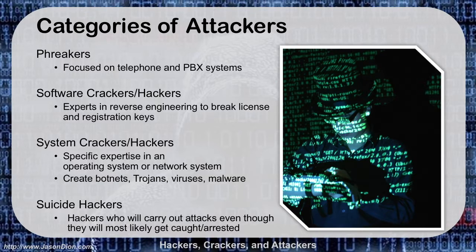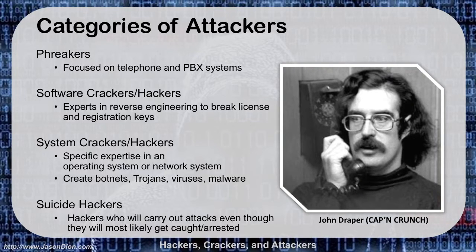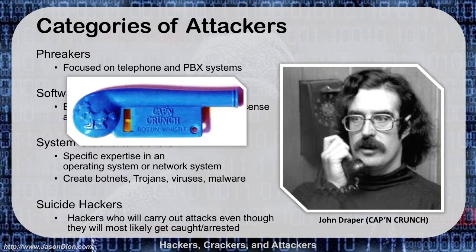Let's talk about the categories of attackers — there's lots of them. Phreakers is a term for people who like to focus on telephone and PBX systems. If you're going after phones, voice, fax machines, or any kind of voice system, that's phreakers. A great example is in the old days we had a guy named Captain Crunch — actually John Draper. He figured out in the 70s that Captain Crunch cereal had whistles, and that whistle happened to be at 2600 hertz. That 2600 hertz was the frequency that, if you blew it into a payphone, it would give you free long distance — it tripped the system into thinking you'd put in the right amount of money. So he focused on phone systems, found a vulnerability, and exploited it using that whistle. That's a phreaker.